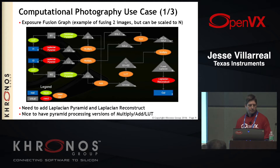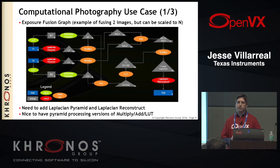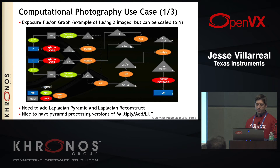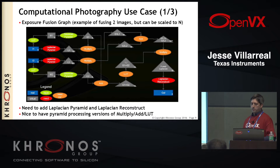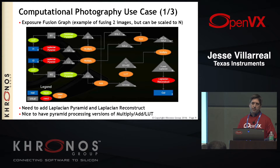Moving on to computational photography. We have this example of an exposure fusing graph where you have two different images taken at different exposures and you want to fuse those into a single image. Looking at the existing 1.0 spec, we had many of the components needed to do that, except for the red circles here. We were missing the Laplacian pyramid and the Laplacian reconstruct. Those are two of the kernels we've added into the spec for 1.1. The other thing to notice is all the orange circles — we can do the multiplies and the adds, but the inputs and outputs are all image pyramids. You can do that with 1.0, but there's a lot of overhead in setting up the graph, since you would have to get a reference for each image out of that pyramid and then create the node set for each of those images.